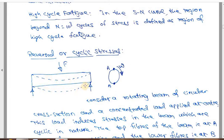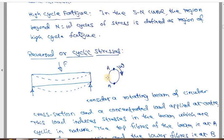The lower fibre of the beam is subjected to stretching action — elongation — so it is in tension. Top fibre is in compression, lower fibre is in tension. Marking point A at the top, it is subjected to compressive stress; point B at the bottom is in tension. When the beam undergoes half a cycle of rotation, point A moves to where point B was, and point B moves to where point A was.